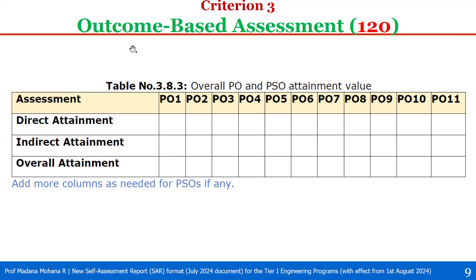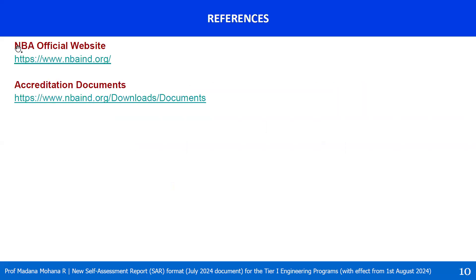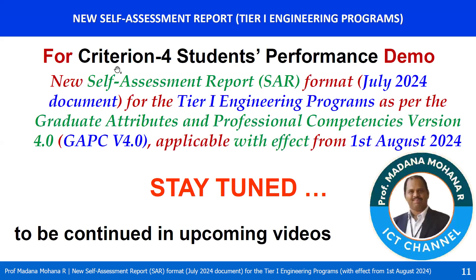That is about Criterion 3, outcome-based assessment. The NBA official website is www.nbaind.org. On the home page, click on accreditation documents. Under documents, you can find Tier 1 of undergraduate engineering programs, where the new self-assessment report and its pre-qualifiers are available. Evaluation guidelines have not yet been released. In the upcoming video, we will see the next criterion, that is Criterion 4, students' performance. Stay tuned. To be continued in upcoming videos.